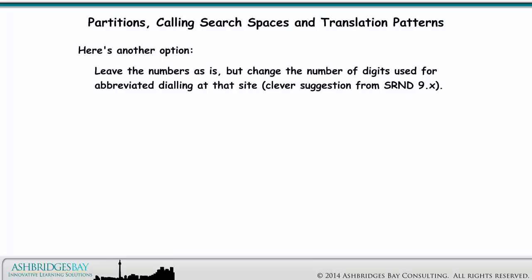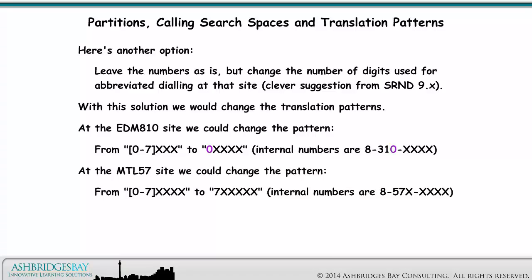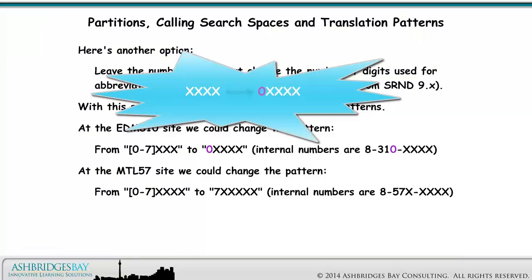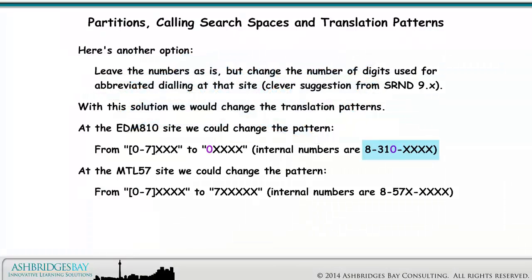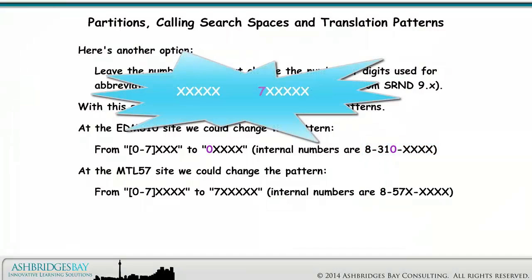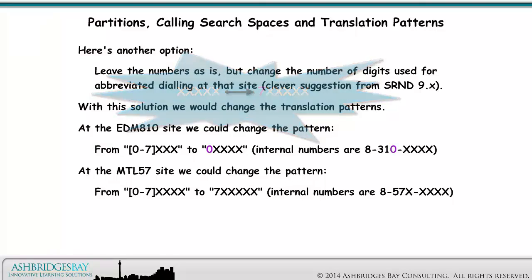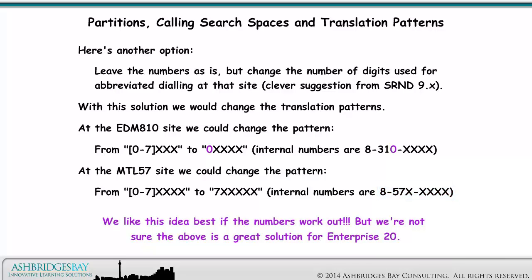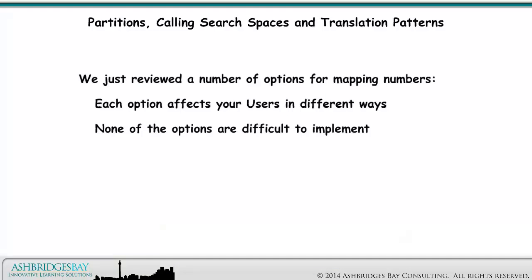Here's another option: leave the numbers as is, but change the number of digits used for abbreviated dialing at that site — another clever suggestion from SRND 9.x. With this solution, we could change the translation patterns. At the Edmonton 810 site, we could change the pattern from XXXX to 0XXX — internal numbers are 8-310-XXXX. And at the Montreal 57 site, we could change the pattern from XXXXX to 7XXXX — internal numbers are 857-XXXX. We like this idea best if the numbers work out, but we're not sure the above is a great solution for Enterprise 20. We just reviewed a number of options for mapping numbers. Each option affects your users in different ways, and none of the options are difficult to implement. Pick one and move forward.